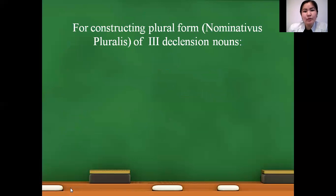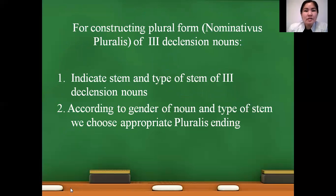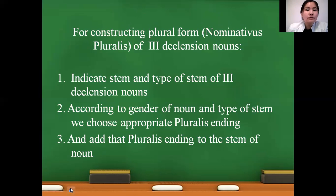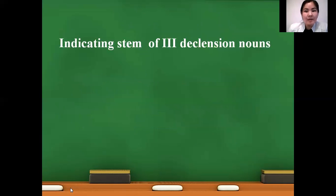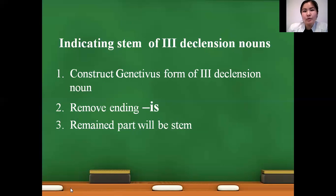Everything is more complicated when we have third declension nouns. For constructing Nominativus Pluralis form, first we need to indicate the stem and type of stem. After that, we look at which gender the noun is, which type of stem it is, and according to these two specific features, we choose the appropriate pluralis ending and add it to the stem. First we need to construct the genitive form of the third declension noun, then remove the ending -is, and the remaining part will be indicated as the stem.